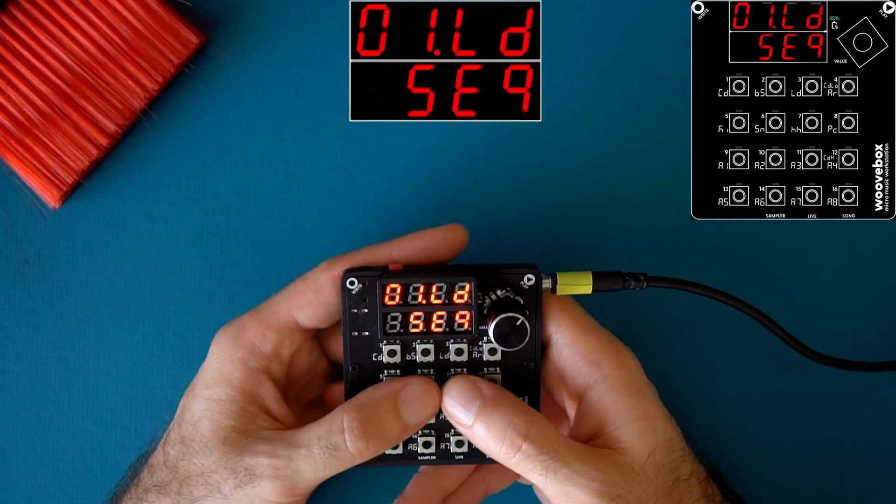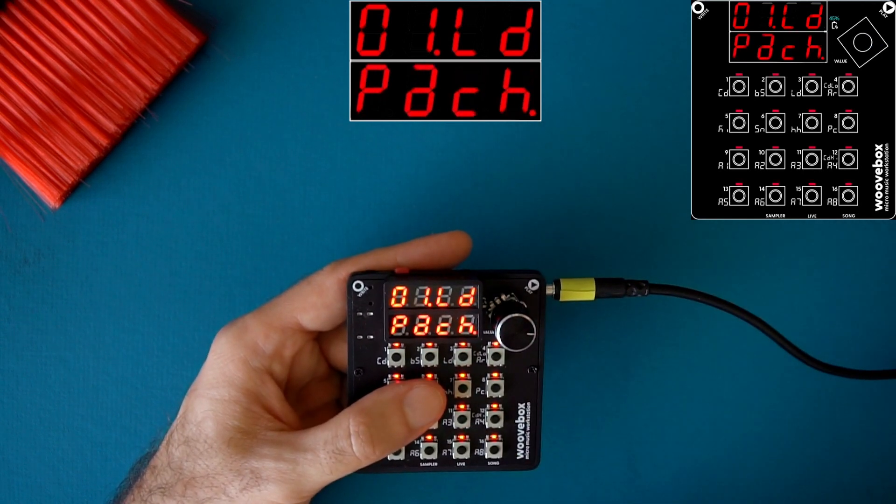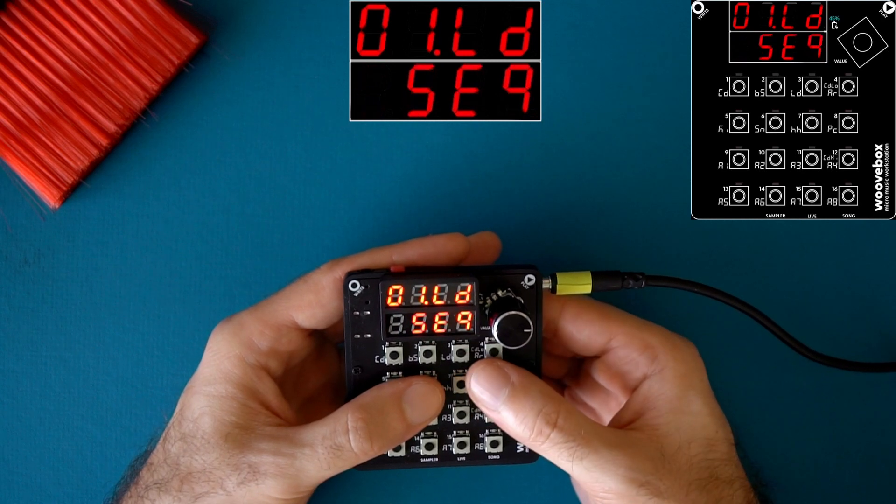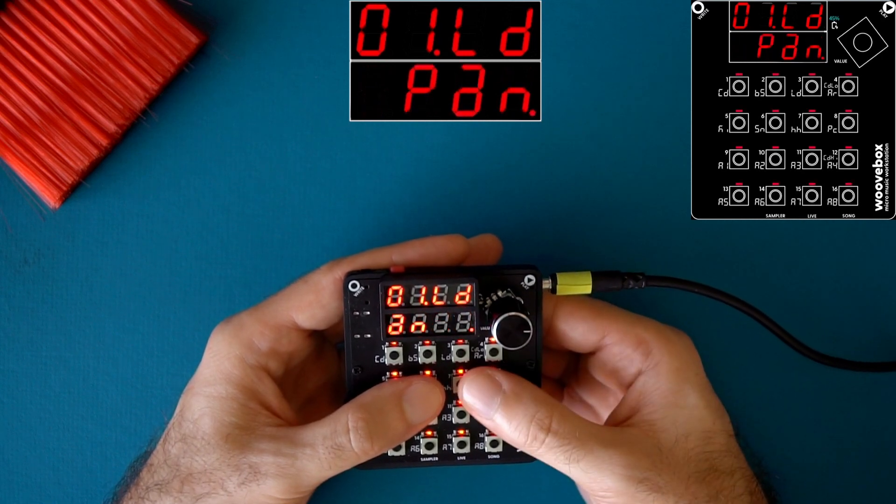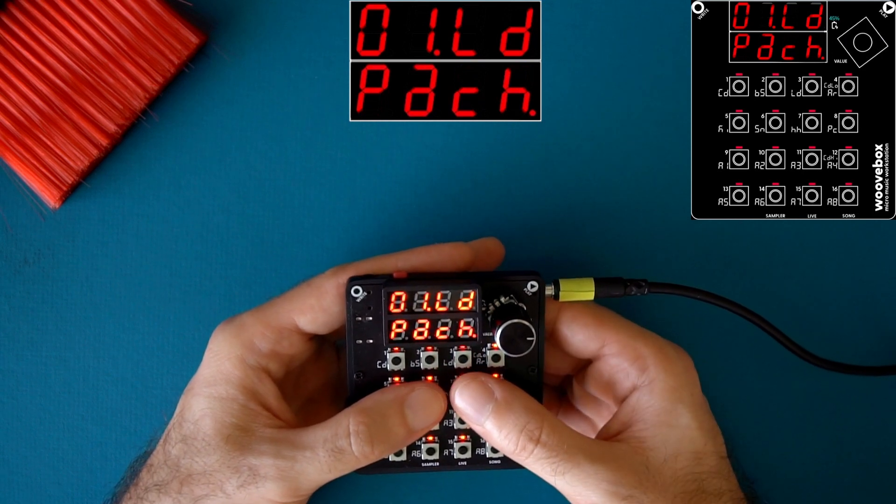So how do you get to the patch page? Well, from the sequencer, you turn the encoder all the way to the right until you reach the patch page. You can click the encoder again to go back to the sequencer and click it once more to go back to the last page you were on, which for us is the patch page.